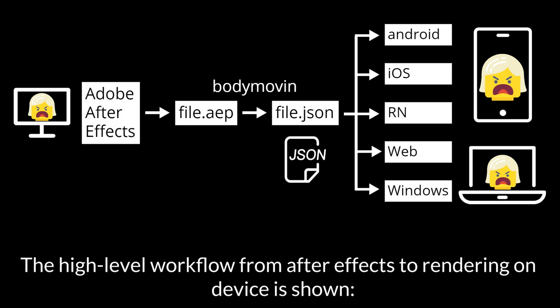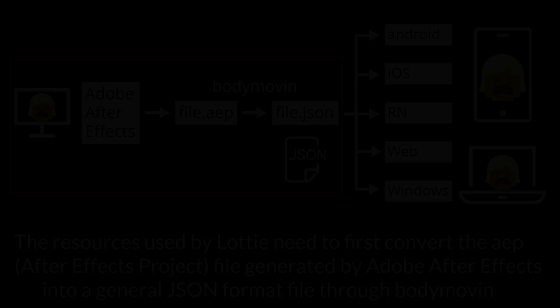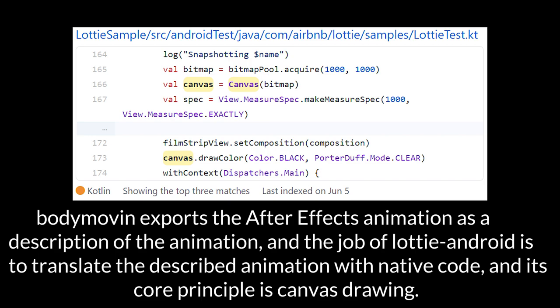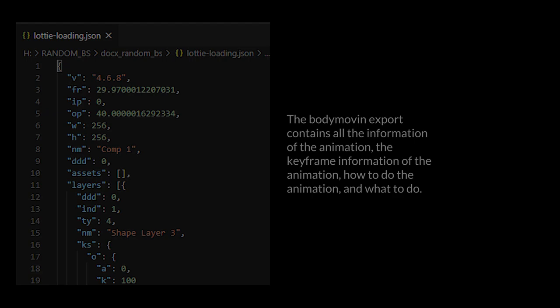The high level workflow from After Effects to rendering on the device is shown. Designers use After Effects to make animations and export JSON files. The resources used by Lottie first convert the AEP After Effects project file into a general JSON format file through Bodymovin. Bodymovin exports the After Effects animation as a description of the animation, and the job of Lottie Android is to translate that described animation with native code. Its core principle is canvas drawing — Lottie's animation is drawn by a pure canvas.